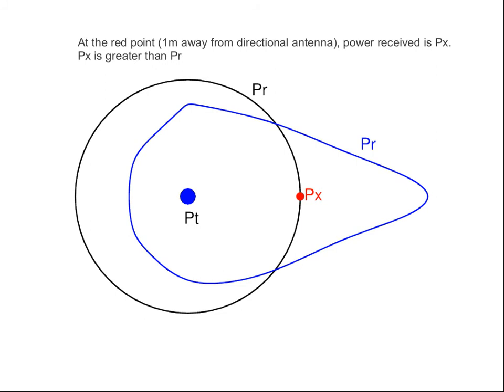We cannot say the exact value, but it will be less than 4 watts — because our signal attenuates across distance. And in this direction, since the point is closer than the 1-watt blue line, it must be greater than 1 watt. So Px is greater than 1 watt and less than 4 watts. Let's say we measured the value and found Px to be 2 watts.